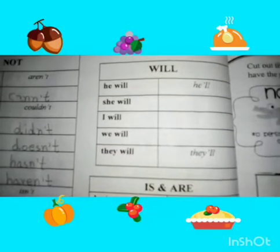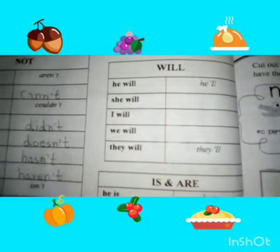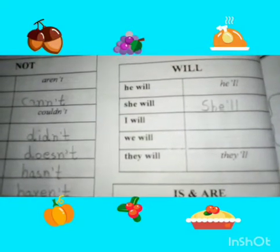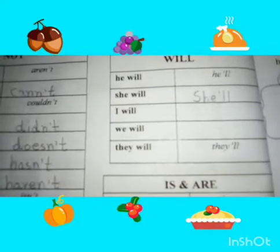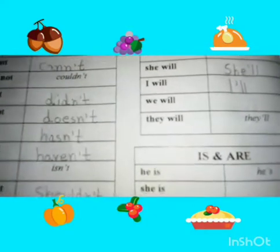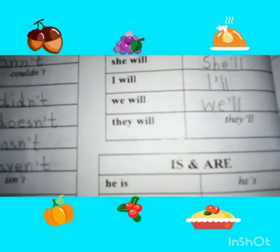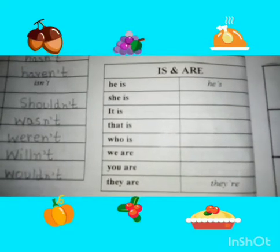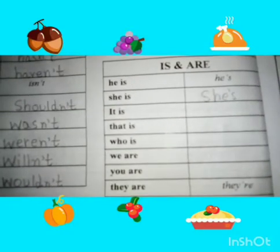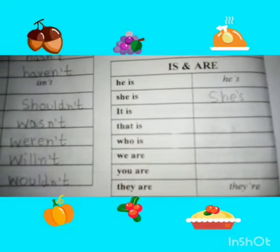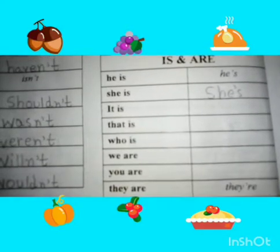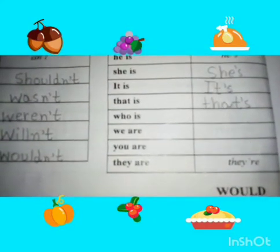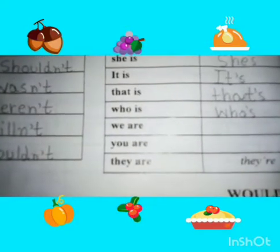He will → he'll. She will → she'll. Here we use apostrophe in place of 'wi'. I will → I'll. They will → they'll. Is and are: he is → he's, she is → she's, it is → it's, that is → that's, who is → who's. We are — here we use apostrophe in place of 'a'.